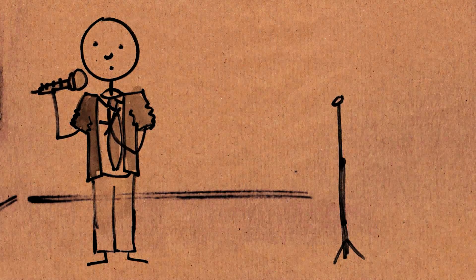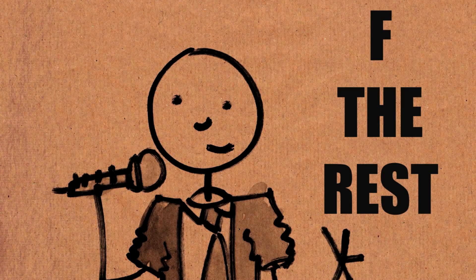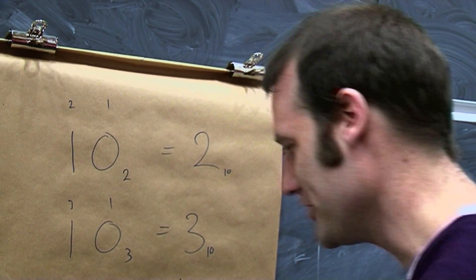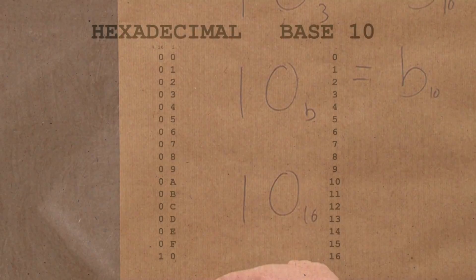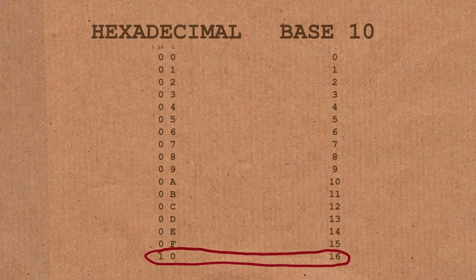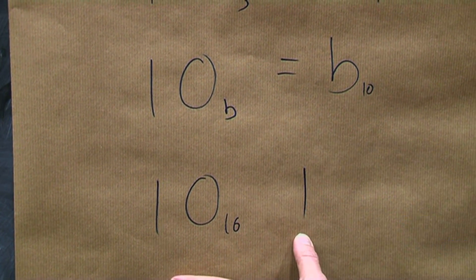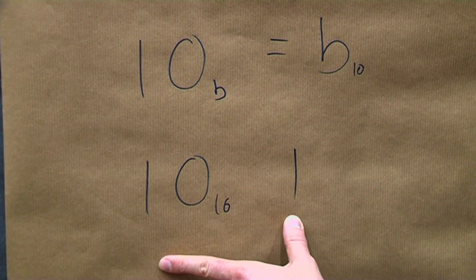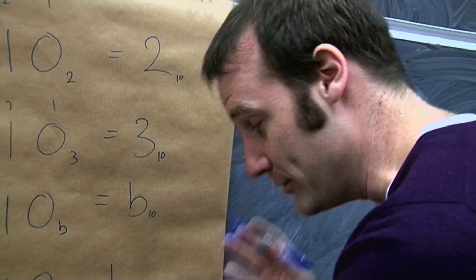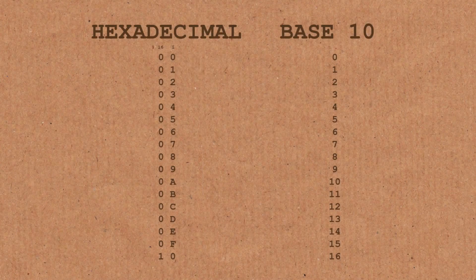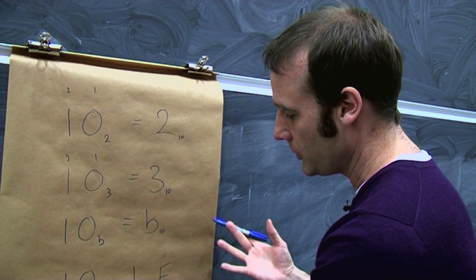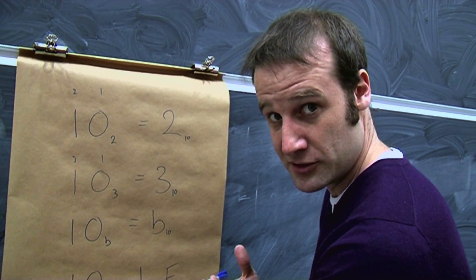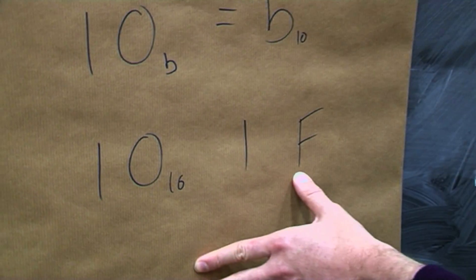There are 10 types of people in the world: those who understand hexadecimal, and F the rest. That one is actually quite funny because in hexadecimal, which is base 16, 1, 0 in base 16 means there are 16 types of people. There's one category who understand hexadecimal, but the remaining 15 — in hexadecimal, 15 is just the letter F. So when they say 'F the rest,' they're saying 15 are the rest, with the double meaning that saying F in a sentence implies you're calling them foolish.